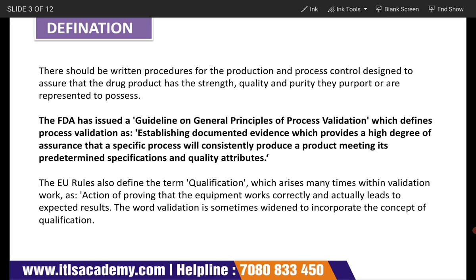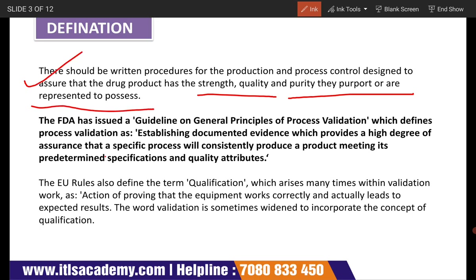The definition says there should be written procedures for production and process control, designed to assure that the drug product has the strength, quality, and purity it purports or is represented to possess. In other words, documented evidence through production and process control is necessary.